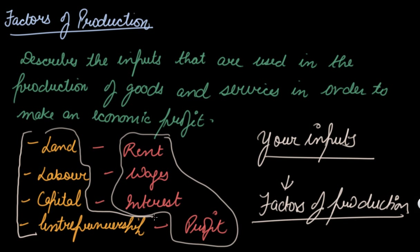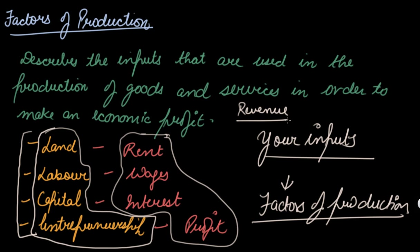These are the technical and economic terms. After selling your output, the revenue you get, and you deduct cost from it, you get your profit. So your factors of production are basically your inputs that are required.